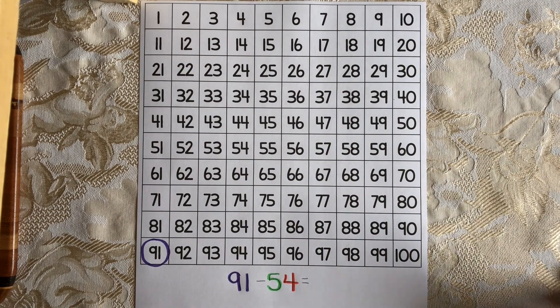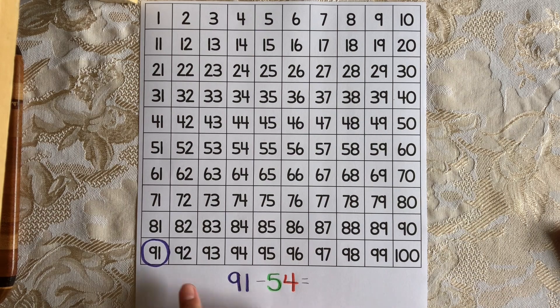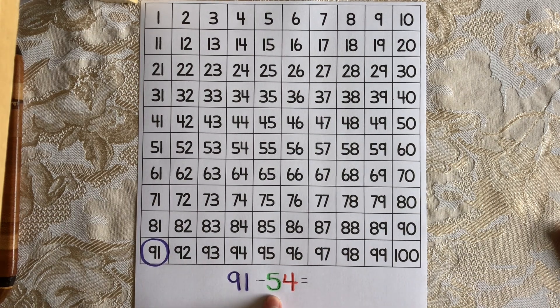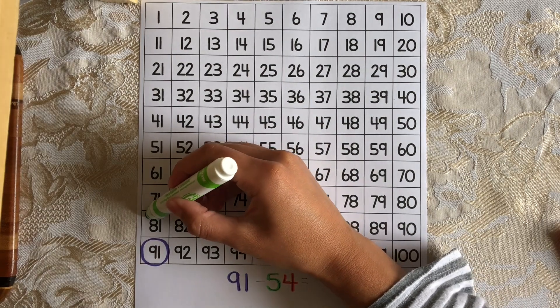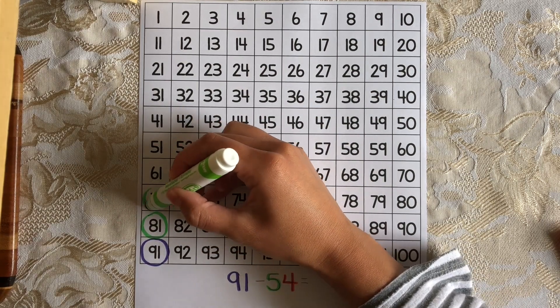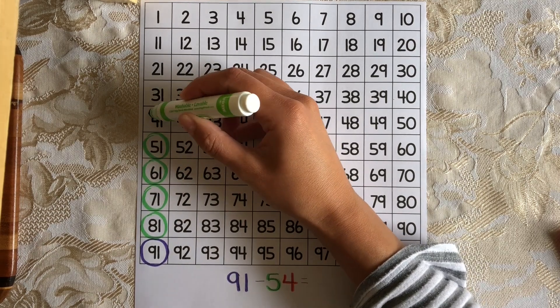We can start by subtracting the 10s. And remember, when you subtract 10s on a 100s chart, you move upwards. So we're going to move up from 91 five times because 54 has 5 tens. So let's do that, that's 1, 2, 3, 4, 5.